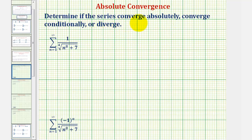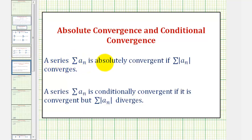We want to determine if the infinite series converge absolutely, converge conditionally, or diverge. A series — the summation of a sub n — is absolutely convergent if the summation of the absolute value of a sub n also converges. The summation of a sub n is conditionally convergent if it is convergent but the summation of the absolute value of a sub n diverges.